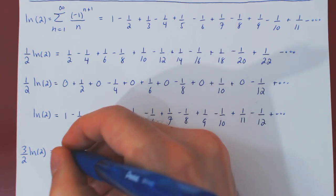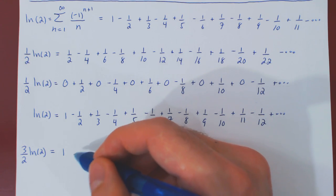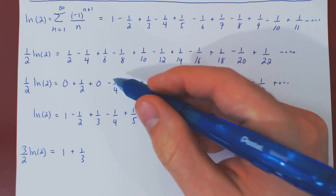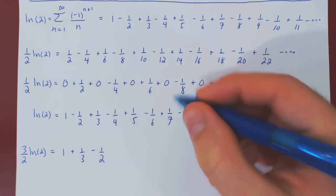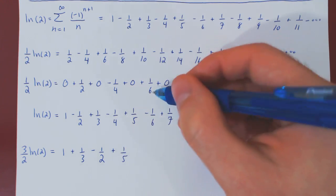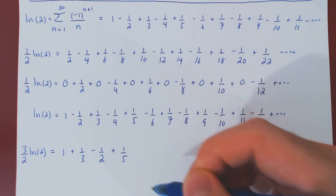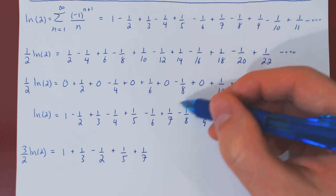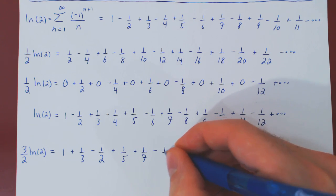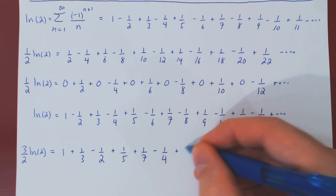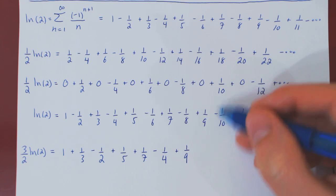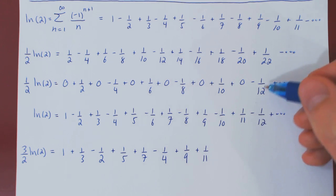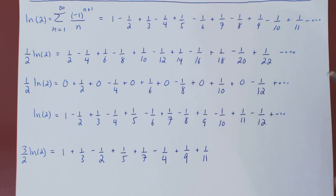Zero plus one is one; one-half minus one-half is zero, so we omit the zero; zero plus one-third is one-third; negative one-quarter plus negative one-quarter is negative two-quarters, which is negative one-half; zero plus one-fifth is one-fifth; one-sixth minus one-sixth is zero, omit it; zero plus one-seventh is one-seventh; negative one-eighth plus negative one-eighth is negative two-eighths, which is negative one-quarter; zero plus one-ninth is one-ninth; one-tenth minus one-tenth is zero, omit it; zero plus one-eleventh is one-eleventh; negative one-twelfth plus negative one-twelfth is negative two-twelfths, which is negative one-sixth.